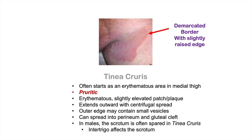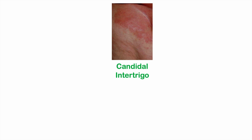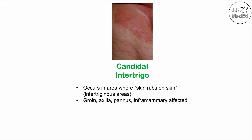Candida intertrigo can often be confused with jock itch or tinea cruris. Candida intertrigo occurs in intertriginous areas — where skin rubs on skin — such as the groin, the axilla, the pannus, and inframammary areas under the breasts. Because candida intertrigo can affect the groin, it can be confused with tinea cruris, so it's important to know ways to distinguish these two infections.